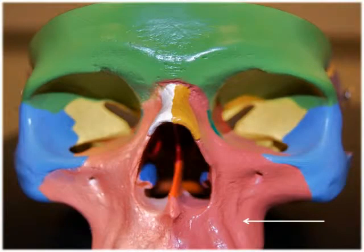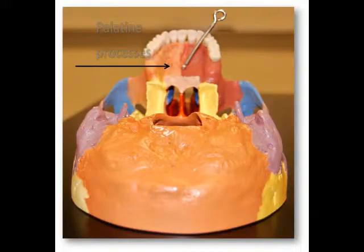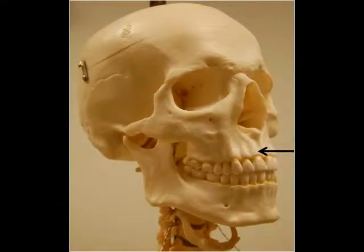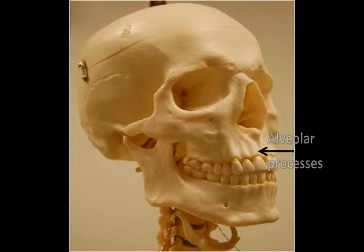Let's take a look at some of the major bony landmarks of the maxillae. The palatine processes are flat horizontal projections of the maxillae that form most of the hard palate. The alveolar processes are ridge-like arches that contain the alveoli, which are the tooth sockets for the upper maxillary teeth.